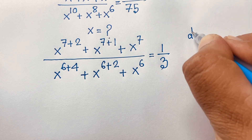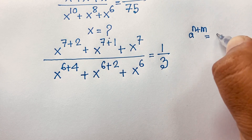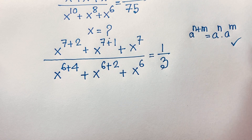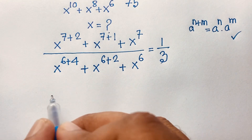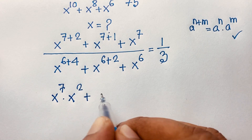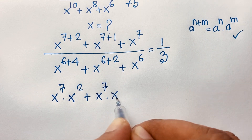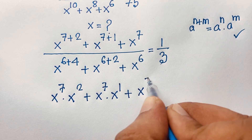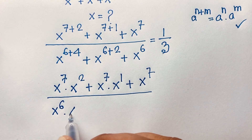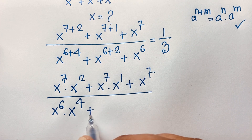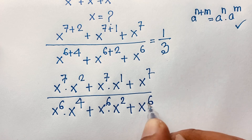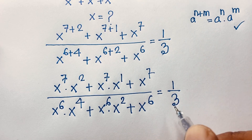According to the exponential law, we know that a to the power n plus m equals a to the power n times a to the power m. Applying this law, the expression becomes: x to the power 7 times x squared, plus x to the power 7 times x, plus x to the power 7, over x to the power 6 times x to the power 4, plus x to the power 6 times x squared, plus x to the power 6, equals 1 over 3.